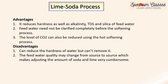The advantages of the lime soda process are: it reduces hardness as well as alkalinity; it reduces total dissolved solids and silica in feed water; the raw water does not need to be clarified before softening; and the hot process can also reduce dissolved CO₂. The disadvantages are: it can reduce but not completely remove hardness; and feed water quality varies by source, making it difficult to accurately adjust the amounts of lime and soda required. The next video will cover calculations and numericals.